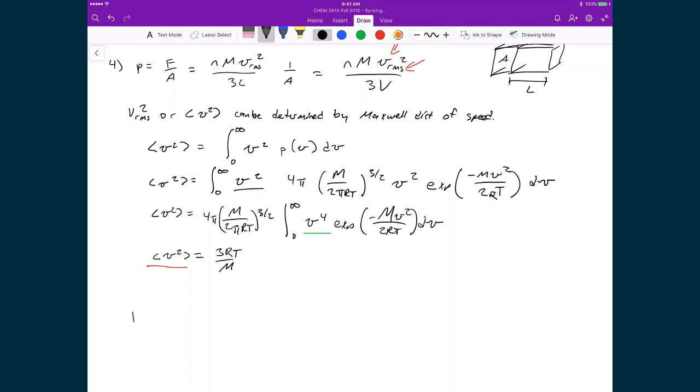And so what that allows me to do is then to write my pressure as n times capital M over 3 times V. And with that I'm going to multiply by 3RT divided by capital M. And with that I can cross off the capital Ms and the 3s, and what I'm left with is nRT divided by V.